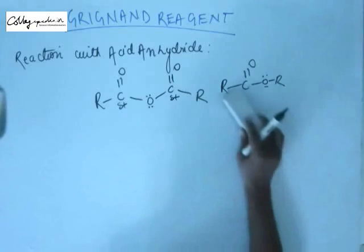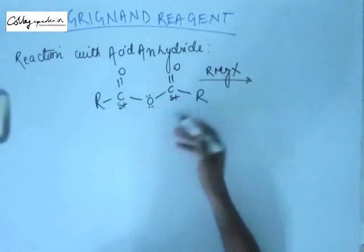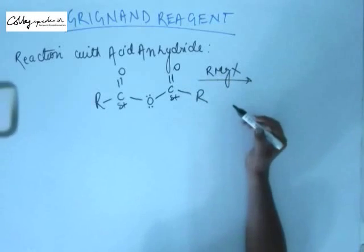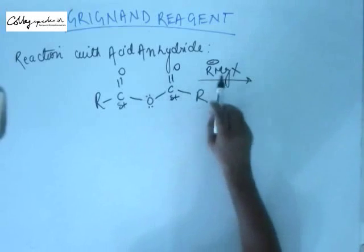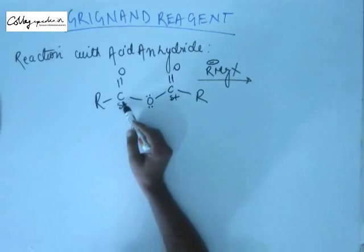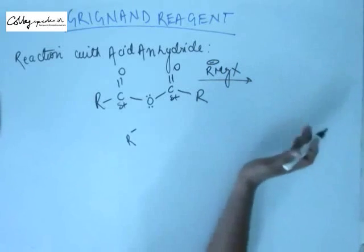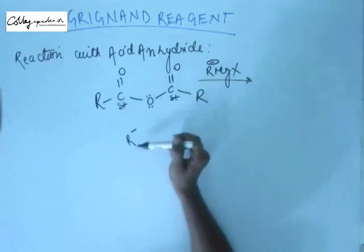Nevertheless, acid anhydride is reactive and will show some reaction with Grignard reagent. These R groups can be different or the same. The R minus of Grignard reagent will attack one of the two carbonyl carbons — whichever is more electron-deficient. If the R group is bulkier, the inductive effect will be more and the plus charge on that carbon will be less, so Grignard reagent will attack the carbon with the smaller R group.